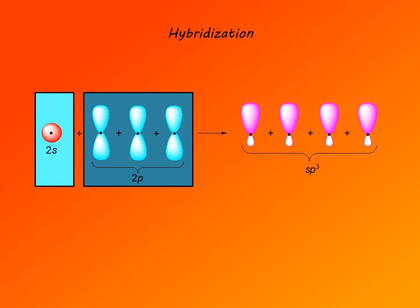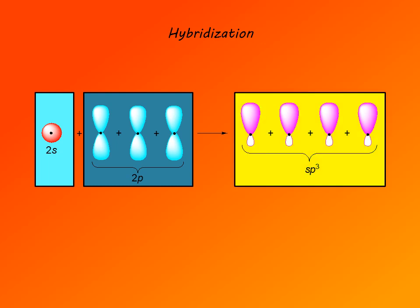Since valence bond theory is broken, we have to fix it, and so we introduce an ad hoc hypothesis — a simple mathematical operation called hybridization. We combine these four orbitals to give four new combined or hybrid orbitals. Hybridization of 1 2s and 3 2p orbitals gives four hybrid sp3 orbitals, which in terms of shape and energy are in between s and p orbitals.